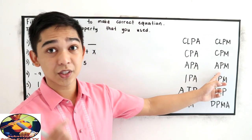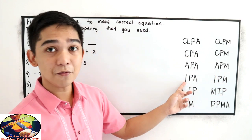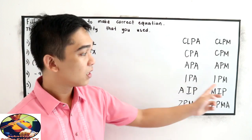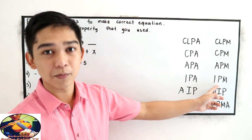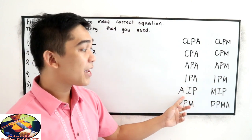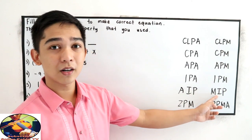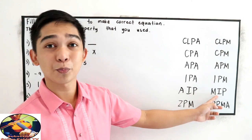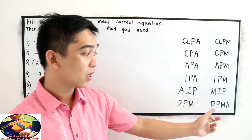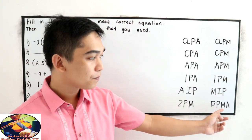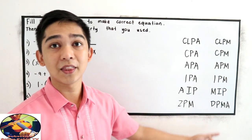APM for associative property of multiplication, IPA for identity property of addition, IPM for identity property of multiplication, AIP for addition inverse property, MIP for multiplication inverse property, ZPM for zero property of multiplication, and DPMA for distributive property of multiplication over addition.